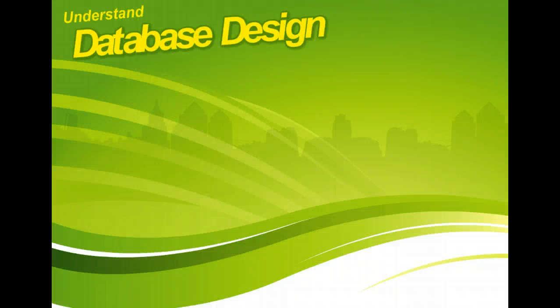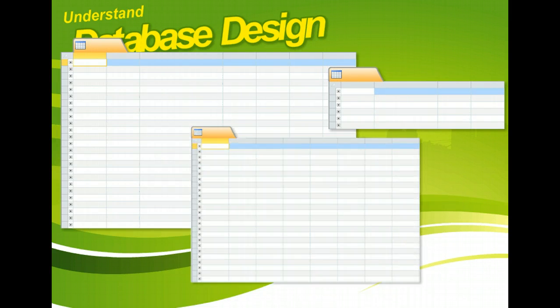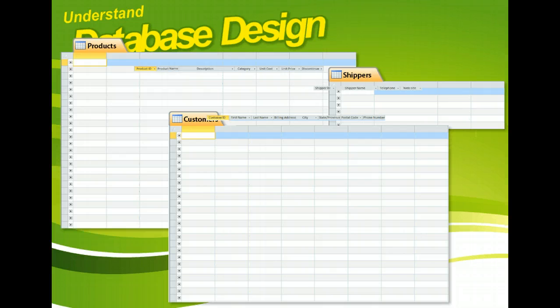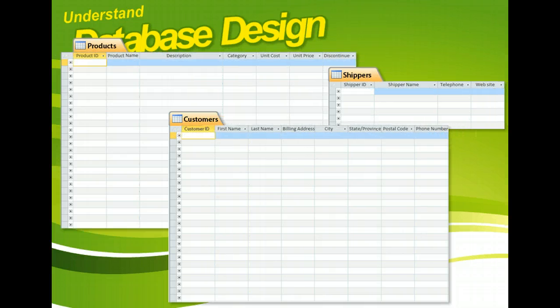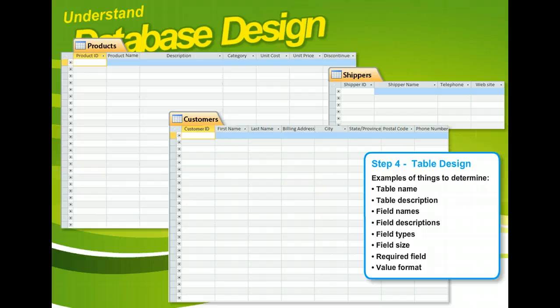During the table design phase, determine which tables you need, what fields will be in each table, and what type of data you will store in each field — text, numbers, dates, graphics, and so on. The data lists that you create from the reports become the basis for designing your tables. Make it easy to see which tables you'll need, and what data should be in each.